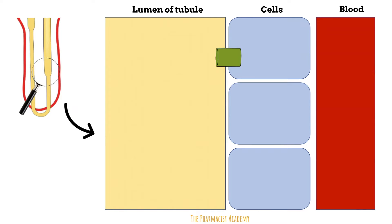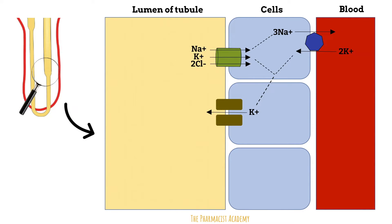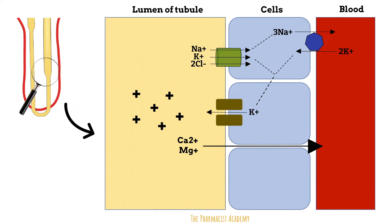So normally, the sodium-potassium chloride co-transporter reabsorbs sodium, potassium, and two chloride ions from the filtrate into the cells. The sodium that just moved into the cell will move into the blood through the sodium-potassium ATPase, which allows three sodiums to move into the blood and two potassiums to move into the cells. A lot of the potassium in the cells now starts to leak out through a potassium channel into the lumen of the tubule. The lumen of the tubule becomes very positively charged, and when the calcium and magnesium in the lumen notice it's too positively charged, they prefer to be with anions, so they end up escaping by passing in between the cells into the blood.